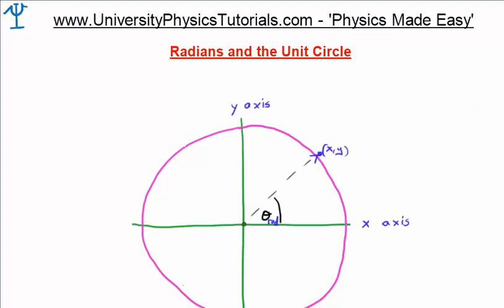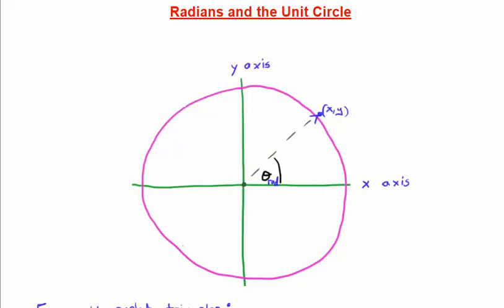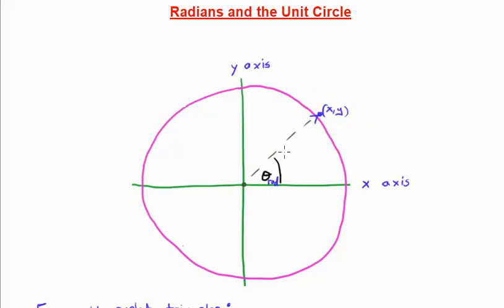Now that we've discussed radians, it's time to move on to the unit circle. I'll continue using both degrees and radians to describe the various angles. A circle lives in two dimensions, requiring an x-axis and a y-axis. Any point in 2D space requires two numbers to describe it — an x-coordinate and a y-coordinate. The important pieces on the circle are the angle, the radius, and the two coordinates describing a point on the circle.